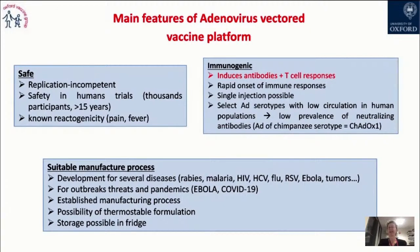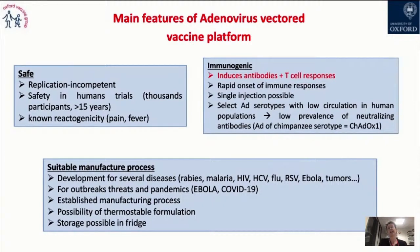The platform has been used to develop vaccines against rabies, malaria, HIV, HCV, flu, RSV, Ebola, and tumors, and has been used for outbreak threats and pandemics — first for Ebola (where the Ad26 Ebola vaccine is licensed) and now COVID-19. This includes not only the Oxford ChAdOx1 vaccine but also the Russian Sputnik, Chinese vaccines, and Janssen. There is an established large-scale manufacturing process, and fridge storage is possible — as you probably know from the news.